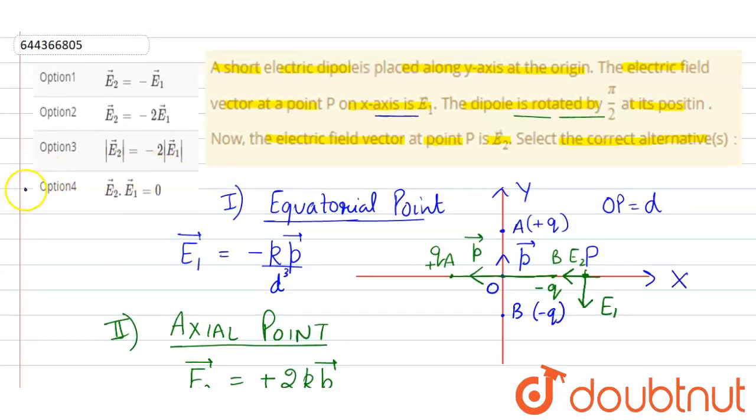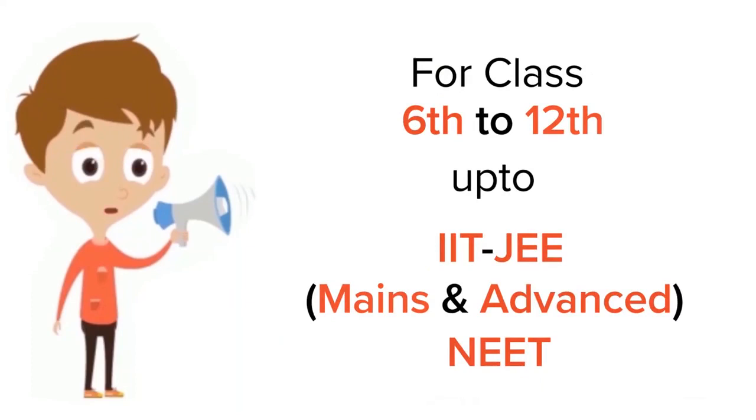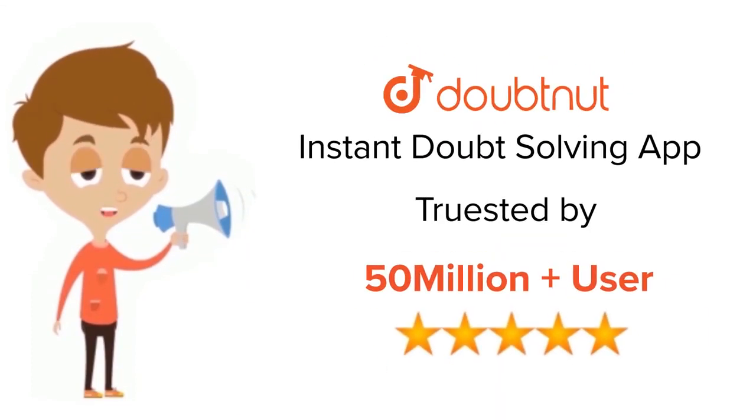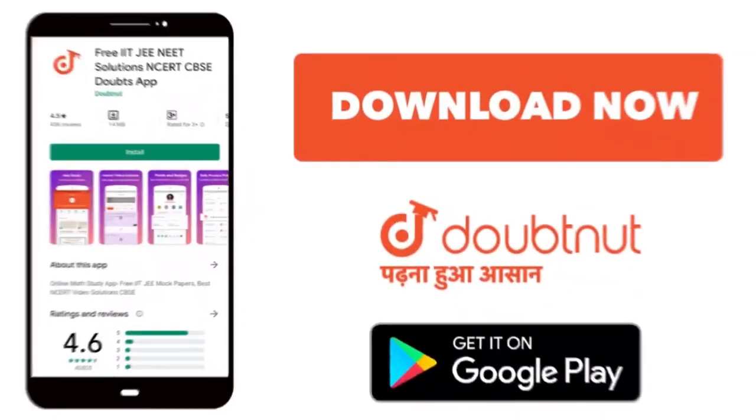So this indicates that option 4th is correct. Thank you. For class 6 to 12 IIT-JEE and NEET level trusted by more than 5 crore students, download Doubtnet app today.